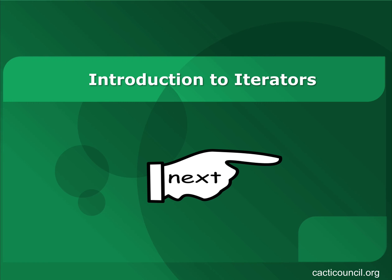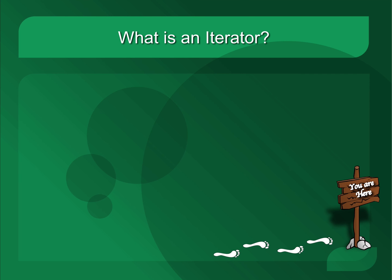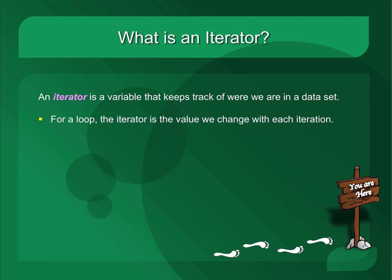Hi everyone, I'm Jeremiah Blanchard, and today I'm going to talk to you about iterators. An iterator is a variable that helps us keep track of where we are within a container or data structure. As an example, let's say we were using a loop to iterate through an array. The iterator would be the value that we change with each iteration — that is, the index that tells us where to look in the array for the data.